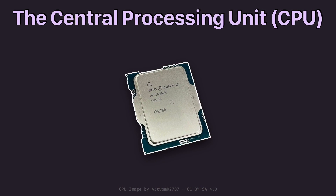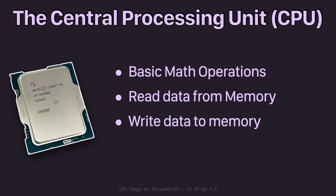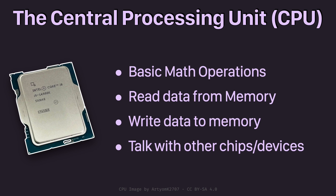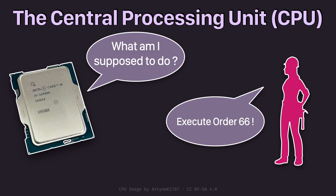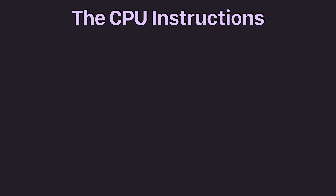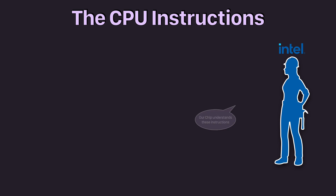The CPU is a chip at the center of every modern computing device and is able to do various things for us. It can perform basic mathematical operations, it can read data from memory and also write data back to memory. It can send and receive information from other chips in the machine, for example a graphics card or a network adapter. But a CPU doesn't do any of these things willy-nilly — it needs to be told what to do and when to do it. And this can be achieved with CPU instructions that are defined by the chip designers.